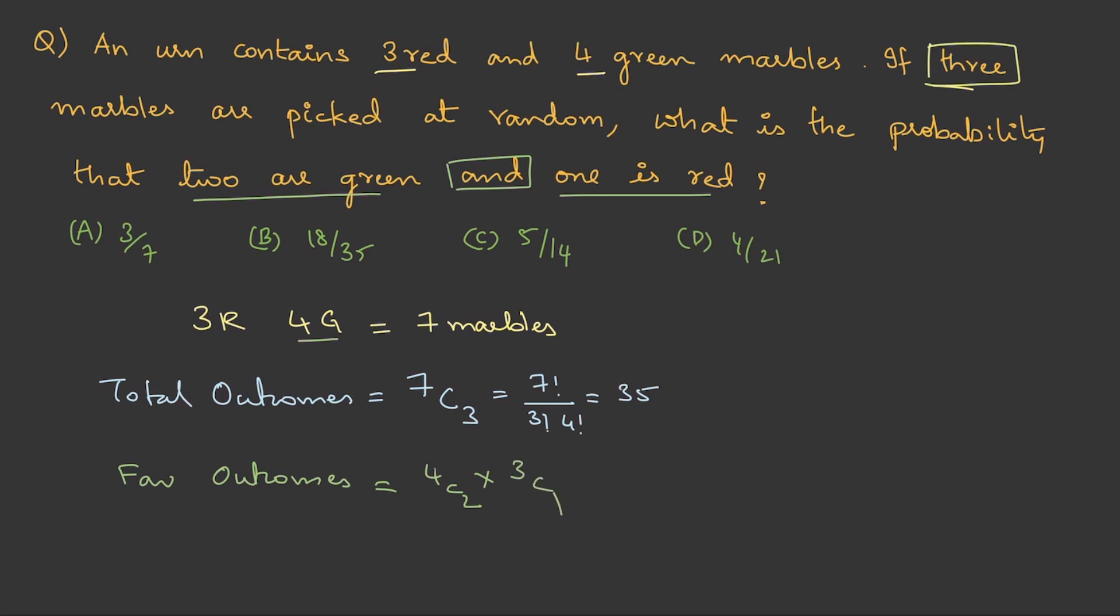Then 1 from red. So red is 3, so 3C1. So you do this. This will be 6 into 3. That is 18. Now probability is favorable outcomes by total outcomes. This is 18 by 35. That is option B.